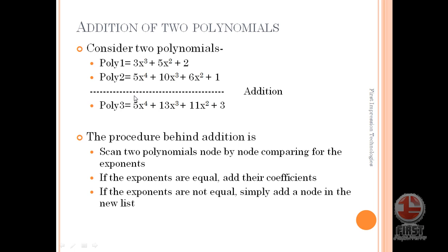The basic concept is: if we have the exponential terms the same, then we can add the two coefficients. For example, in polynomial 2 we have 5x to the power of 4, and this exponent 4 is not available in polynomial 1. So what we will do is simply copy this term 5x to the power of 4 into polynomial 3. Then we scan both polynomials again. In polynomial 1 we get 3x cubed and in polynomial 2 we get 10x cubed, meaning power 3 is common in both. So we add the coefficients: 3 and 10 becomes 13x cubed.